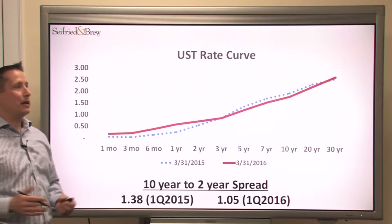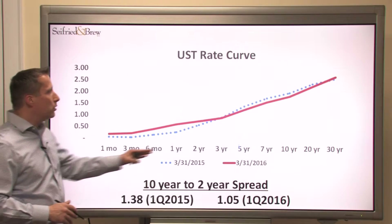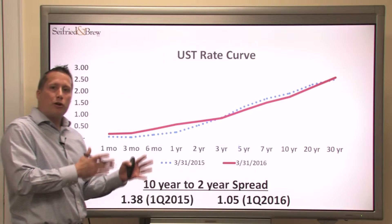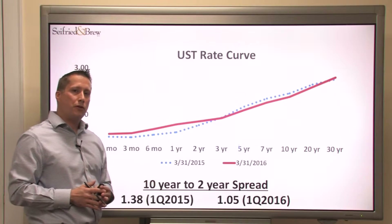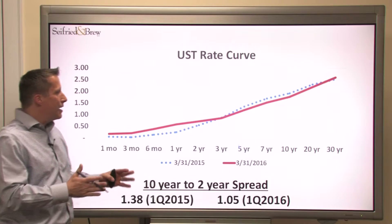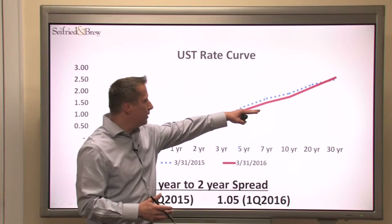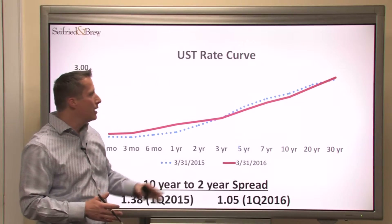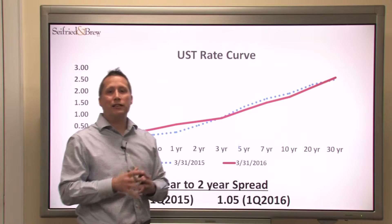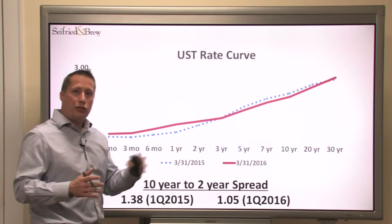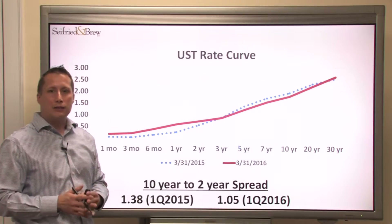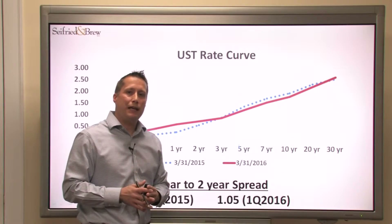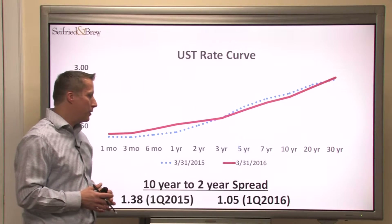Let's take a look at the interest rate environment. Looking at the U.S. Treasury yield curve between the first quarter of 2015 and first quarter of 2016, we can see that the red line being 2016 and the blue dotted line being 2015 show that the long end of the yield curve has actually come down a little bit. Since the majority of our assets are priced off that long end of the yield curve, it can't be the overall yield environment.